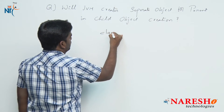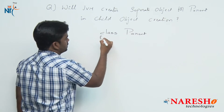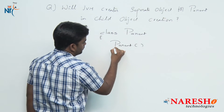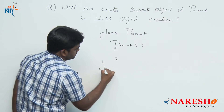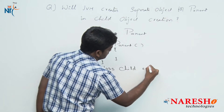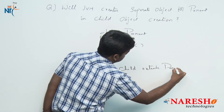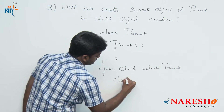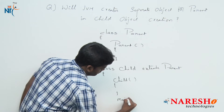Suppose here we are writing one parent class. In the parent class, we are writing a parent class constructor. Next, we are writing the child class. The child is extending from the parent class, and in the child class we are writing a child class constructor, and in the child class directly I am writing the main method.